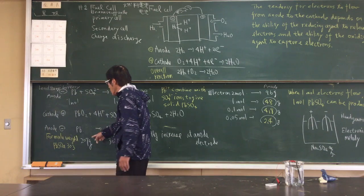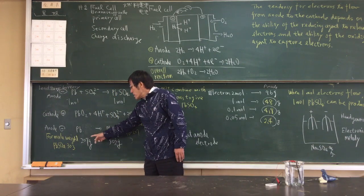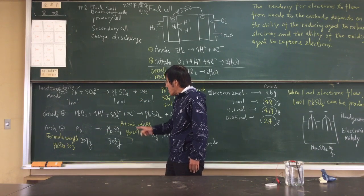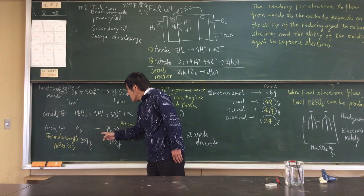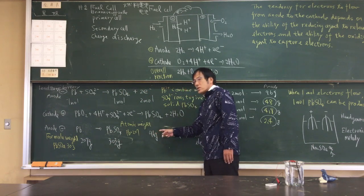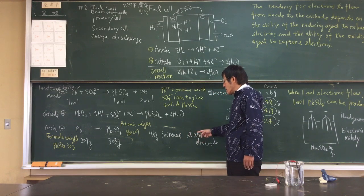Lead atomic weight: 207. At the anode, lead changes into lead sulfate, 96 grams increase at the anode.